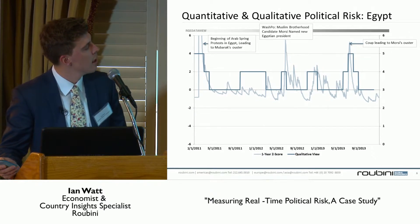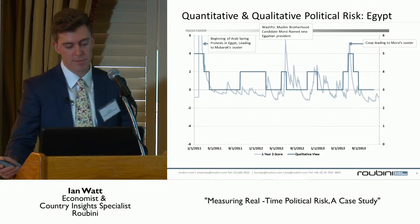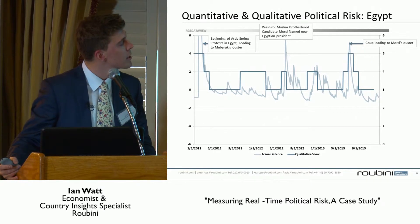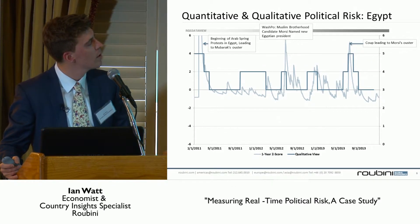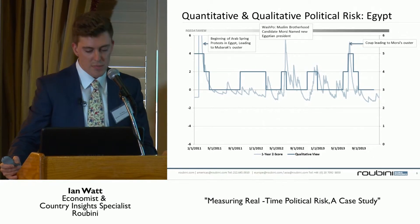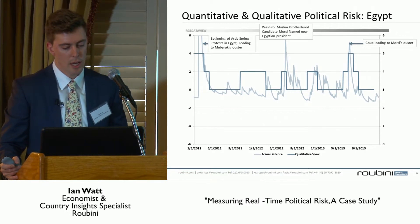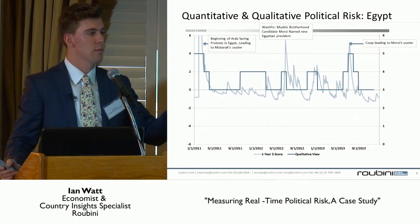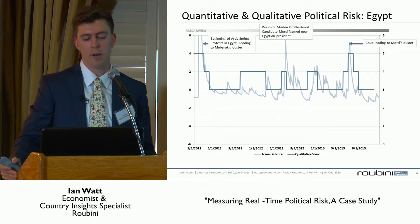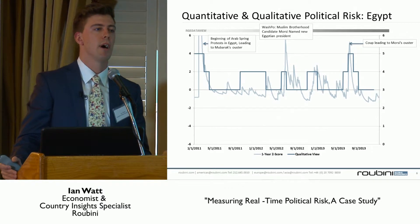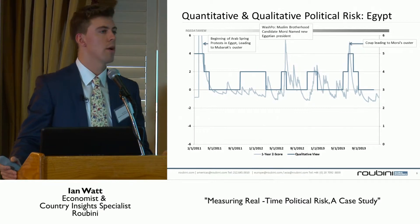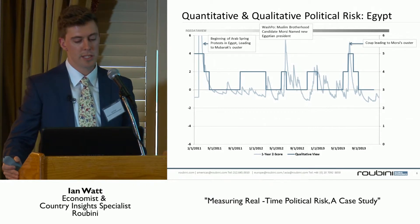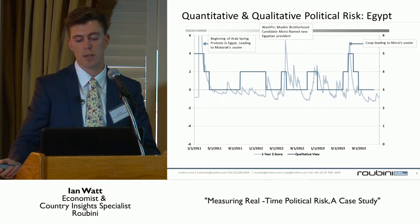Moving away from developed markets, we ran this for Egypt as well. This maps fairly well. The beginning of the Arab Spring protests is widely covered in the media — we see a huge spike in political risk, which correlates with our Egyptian economist's view of political risk. We then see a leveling off until summer 2012 when Morsi is named the new Egyptian president, where we see a strong spike again. The sentiment score is on a scale from zero to 100, zero being bad and 100 being good, so we can get granular information and compare spikes — higher risk in the initial Arab Spring protests versus the coup leading to Morsi's ouster earlier this year.